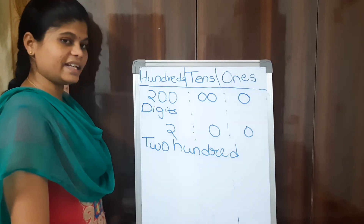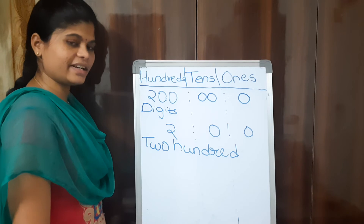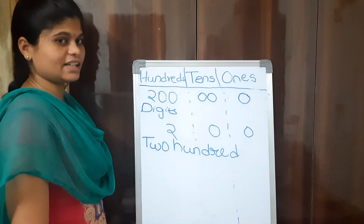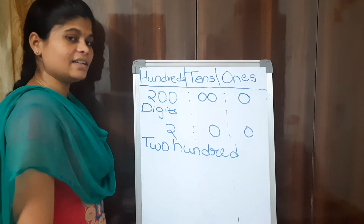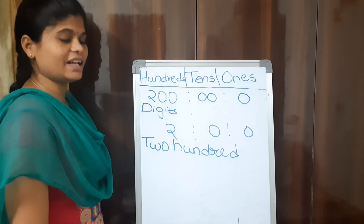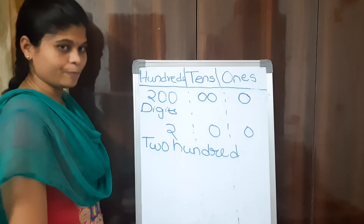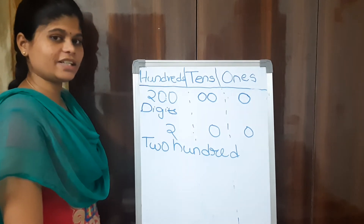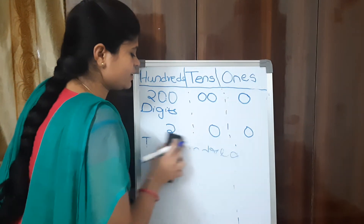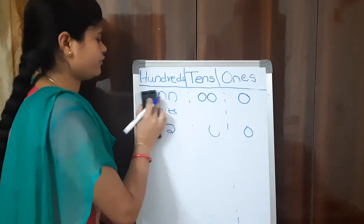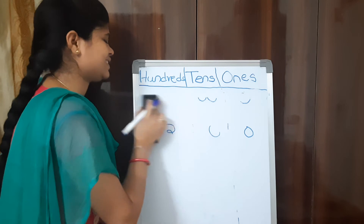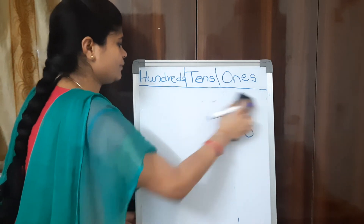After 299 we have 300, then 400, 500, 600, 700, 800, 900, and 999 is the largest 3-digit number. Now, randomly, we will write some numbers with their place values, digits, and number names.